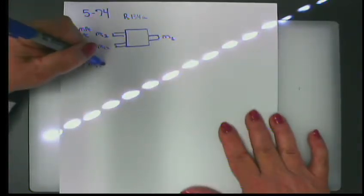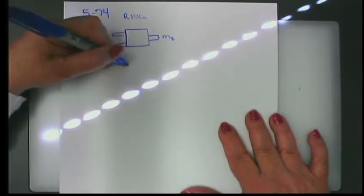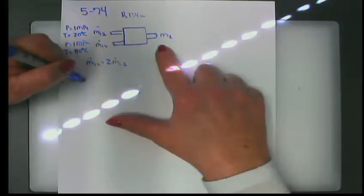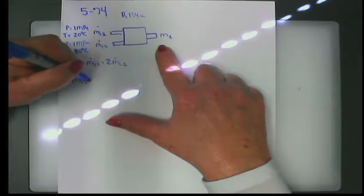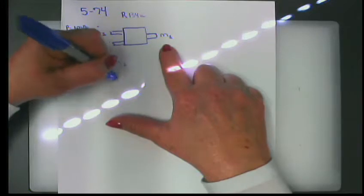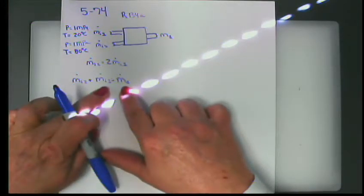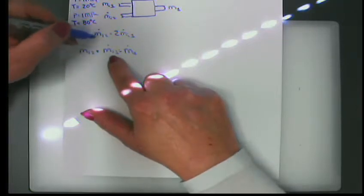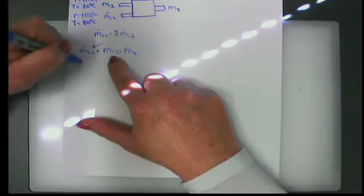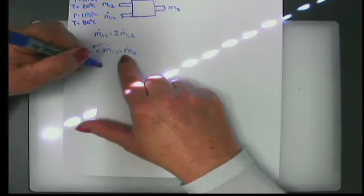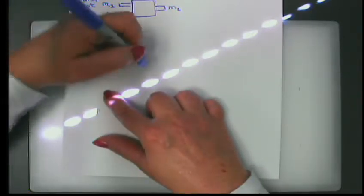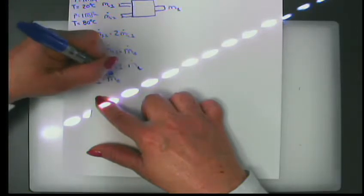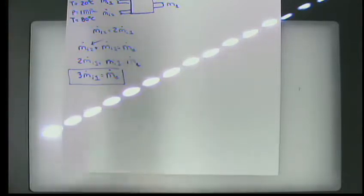Setting up the mass balance: ṁ_i2 = 2·ṁ_i1, and ṁ_i2 + ṁ_i1 = ṁ_e. Substituting: 2·ṁ_i1 + ṁ_i1 = ṁ_e, so 3·ṁ_i1 = ṁ_e. That gives us the mass balance relationship between the streams.